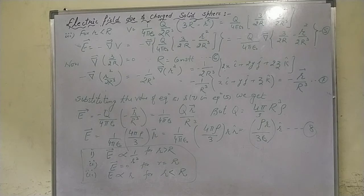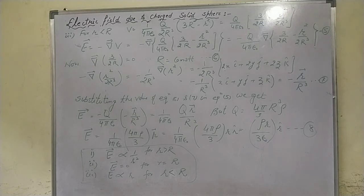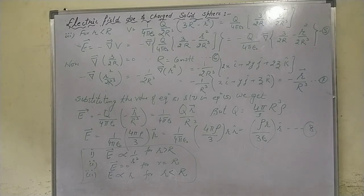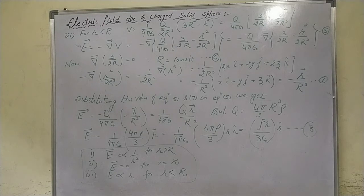Applying the del operator: (∂/∂x)î + (∂/∂y)ĵ + (∂/∂z)k̂, and putting the values, after simplification we get −1/R × (xi + yj + zk), which equals −r/R. Substituting equations 6 and 7 into equation 5, we get E = −q/(4πε₀) × (−r/R) = 1/(4πε₀) × q·r/R.